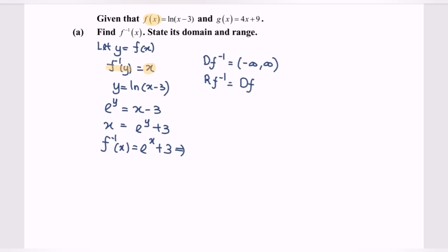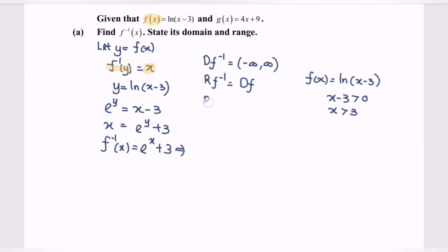The range for f inverse equals the domain of f. Referring to f(x) equals ln(x minus 3), since it is a log form, x minus 3 must be greater than 0, so the domain of f is x greater than 3. Therefore, the range of f inverse is (3, infinity), where 3 is not included.